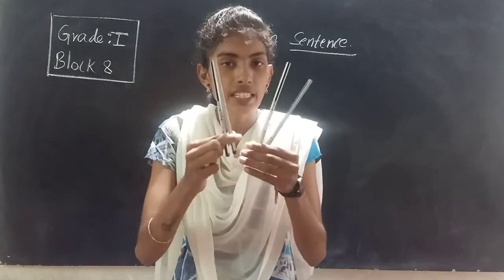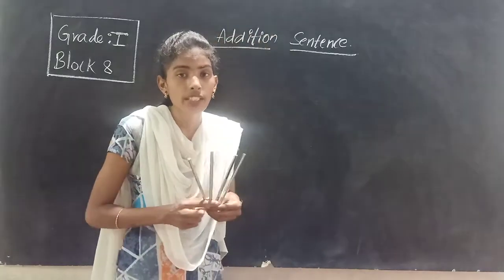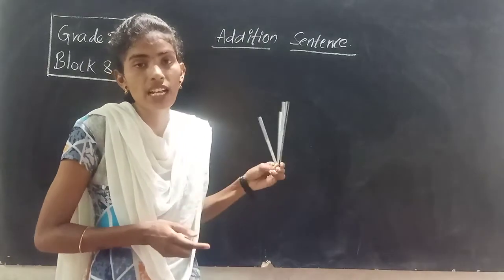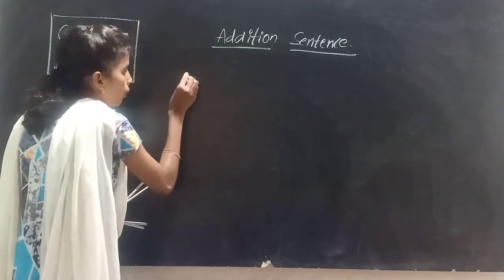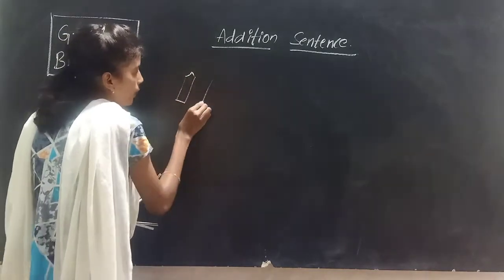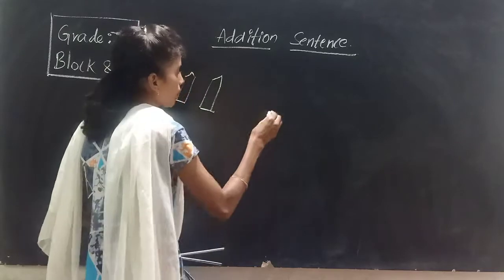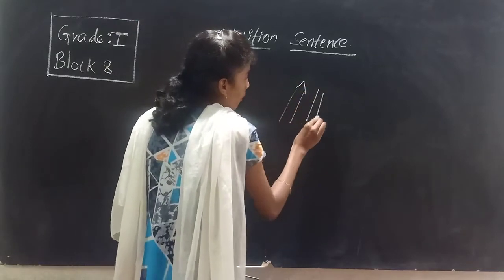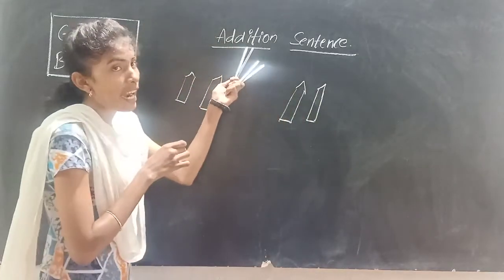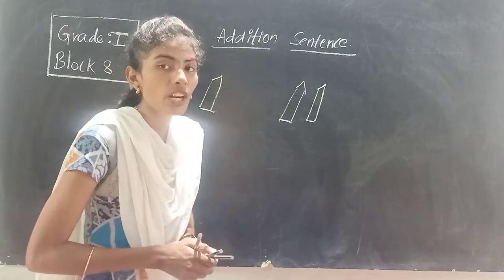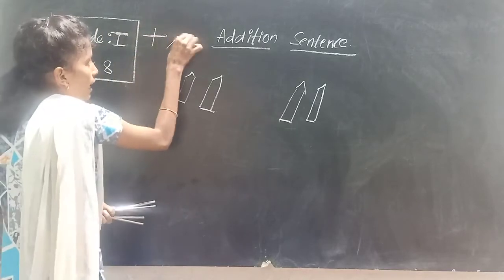So if you want to represent these pencils with an addition sentence, how can you represent them, children? By drawing pictures also we can represent an addition sentence. So I have two pencils in my left hand and two more pencils in my right hand. We have to use some symbols — plus and is equal to.